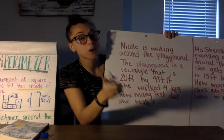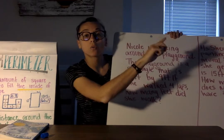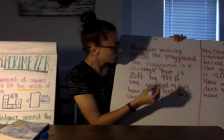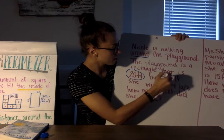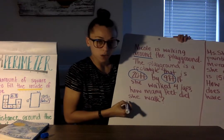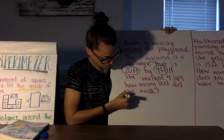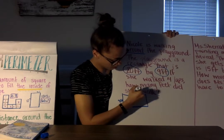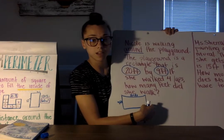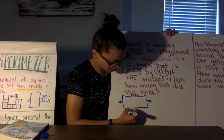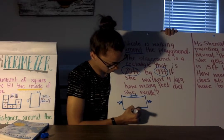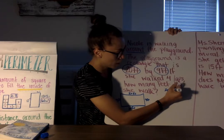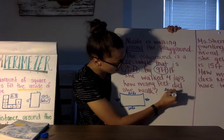If you said perimeter, you are absolutely right, because it says right here she's walking around the playground — she's not walking in the playground, it's like she's walking along the fence. It's 20 feet by 9 feet, so if I draw this rectangle, this side is 9 feet and this side is 20 feet. We know opposite sides are equal in length, so I can finish labeling that. For perimeter, you add up all the sides — so we're not multiplying, we are adding: 20 plus 20, plus 9 plus 9.